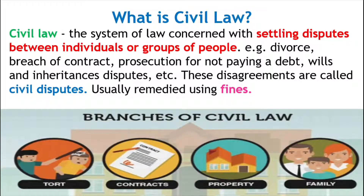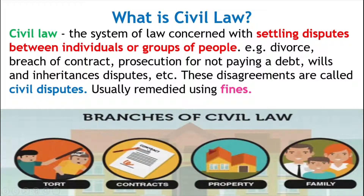Here are some examples of civil disputes. Anything involving family is a civil dispute: adoption services, divorce, inheritance, wills, etc. Property law surrounds things regarding buying properties or divorce settlements over the matrimonial home — the home a couple may have bought after marriage. Contract law is a type of civil law, covering employment contracts or a contract with someone doing work in your home like a decorator. Finally, tort law is all to do with negligence, such as falling over in a supermarket and being able to claim compensation.